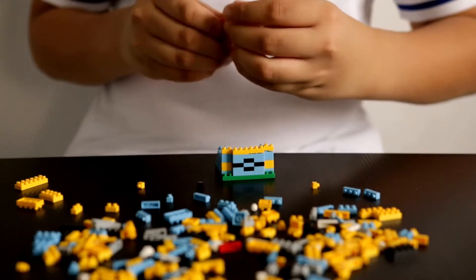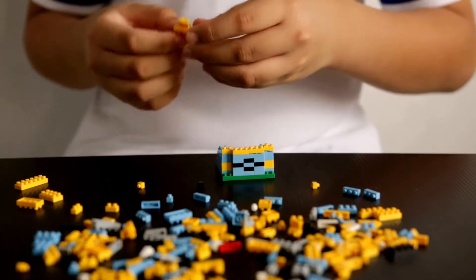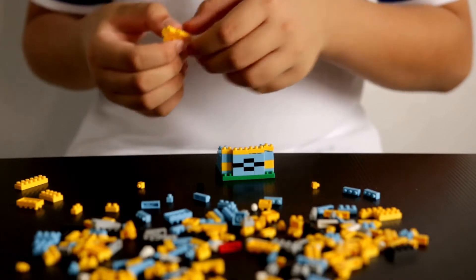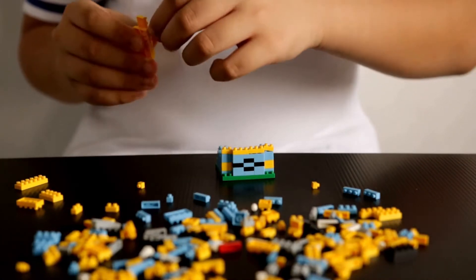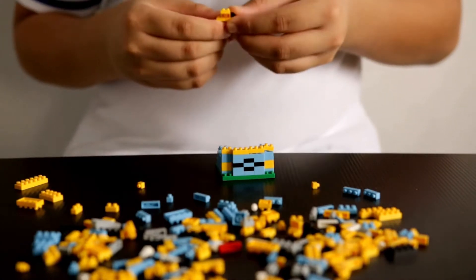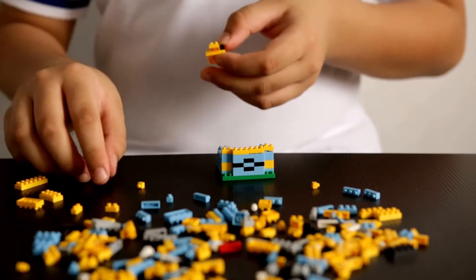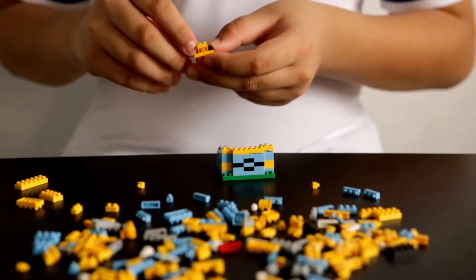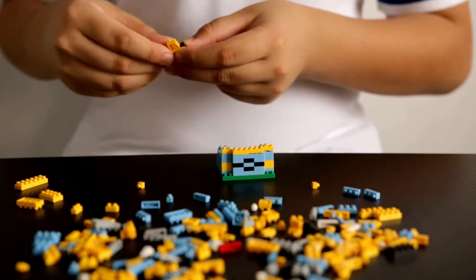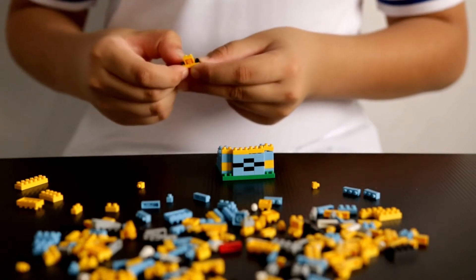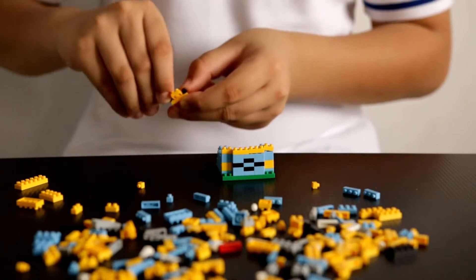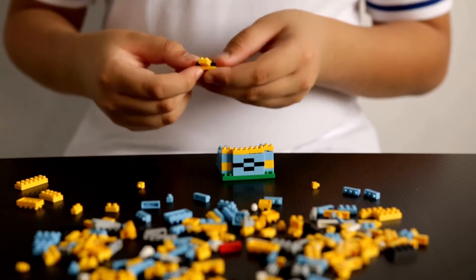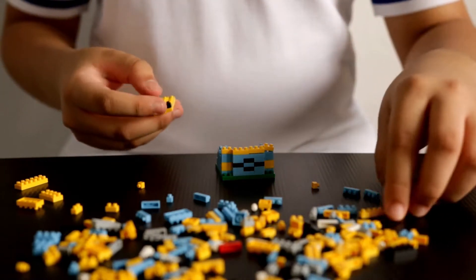The name Lego is an abbreviation of the two Danish words 'Leg Godt,' meaning play well. Approximately 20 billion Lego elements are made every year in the Lego factory in Billund, Denmark. This is about 2 million elements every hour, or 35,000 every minute. There are actually enough Lego bricks to stack from the Earth to the Moon 10 times.